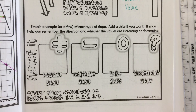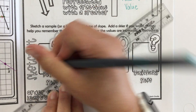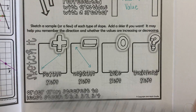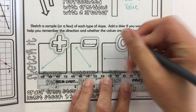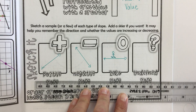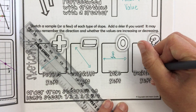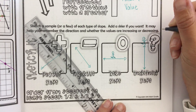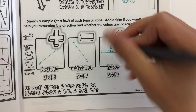For the last part, sketch an example of each type: positive slope goes up from left to right; negative slope goes down from left to right; zero slope is a flat horizontal line — think of a skier on flat ground going nowhere fast; undefined slope is a straight vertical line — think of a skier at the top of a terrifying triple-diamond hill: it's so scary it's undefined.